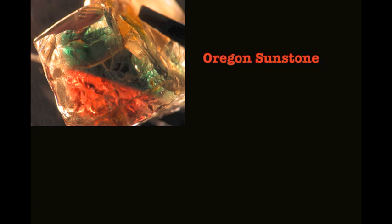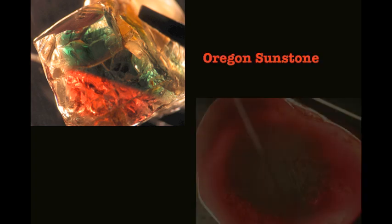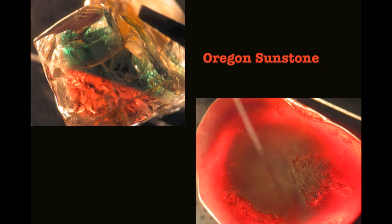Rather than showing a lot of photographs and trying to explain things through a written report, we thought we would instead actually shoot a video and let you see this material itself — comparing the Oregon Sunstone to the Tibet andesine through a dichroscope, to see the unusual differences.